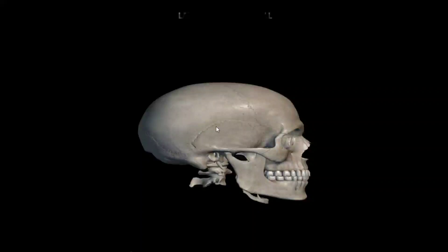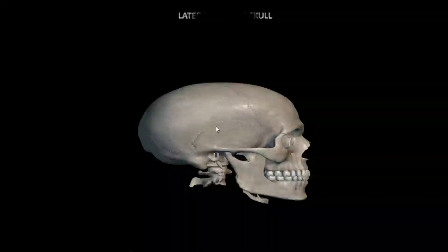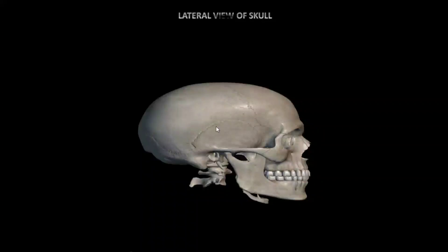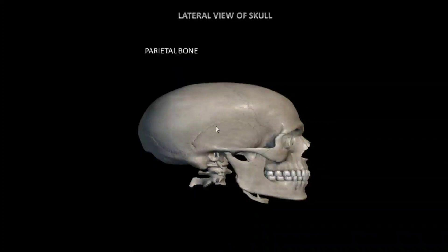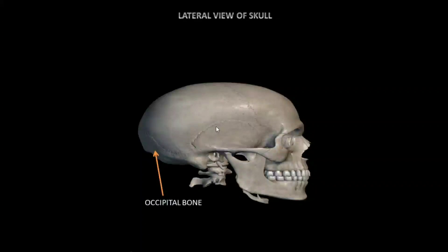Now we are going to study about the lateral view of skull. The first bone is parietal bone — they join at the skull's top and form the roof of the skull. Yeh hamaari skull ka upri hissah hota hai (this is the upper portion of our skull). Next is occipital bone — yeh hamaari skull ka back side mein hota hai (this is at the back side of our skull), and it joins with the first bone of the vertebral column.